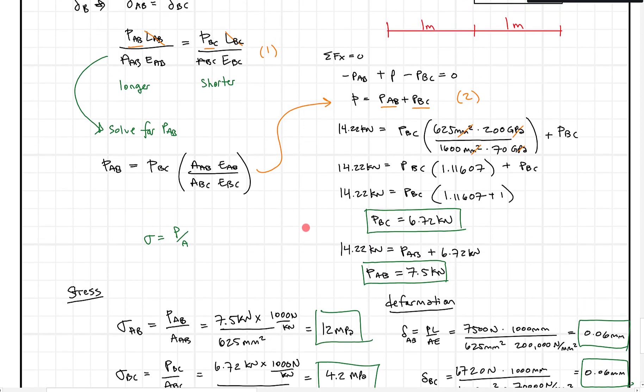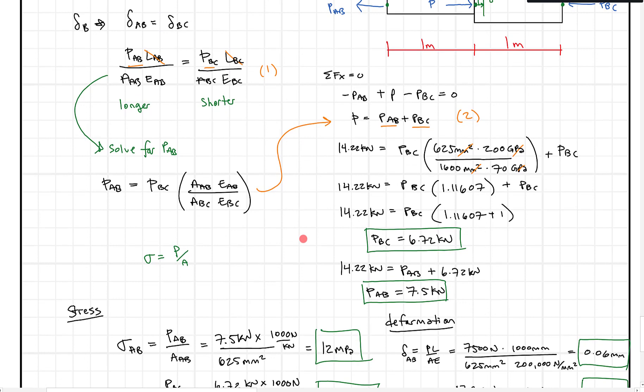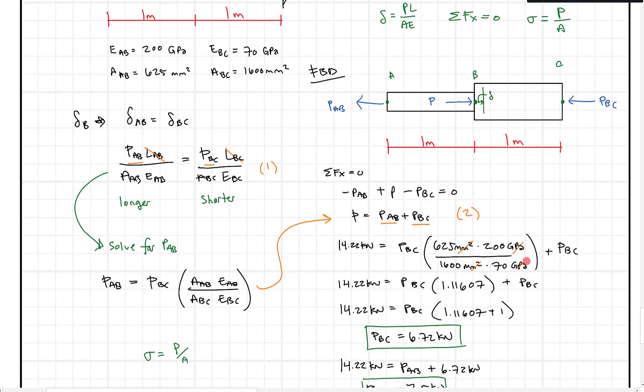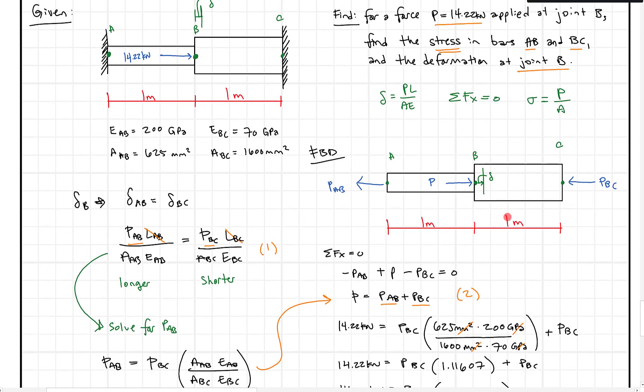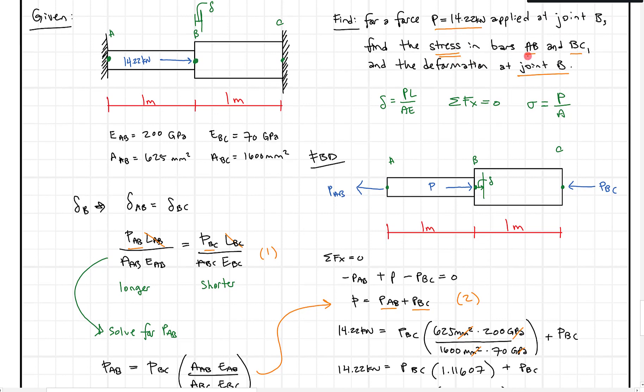And we can come back up and make sure that we solve this correctly. We can double check our equations here. But this is nice. What we did is we went through and we solved for the stress in the bars and the deformation at joint B, using our equations of delta equals PL over AE, and our system of two equations, two unknowns. That was really instrumental. And once we had our forces, we could solve for the stress and the deformation. Hey, so I hope that helps. If you have questions, feel free to drop a comment. Otherwise, keep working hard and moving onward and upward.